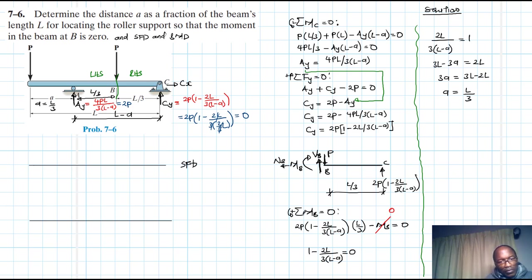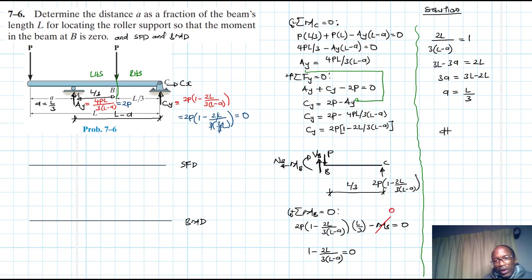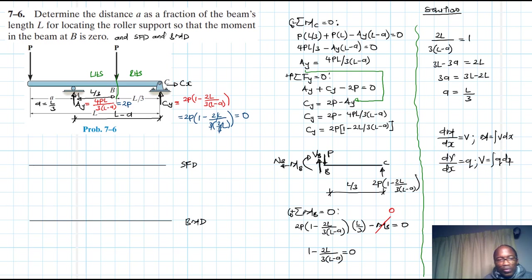We're using the two equations: the rate of change of moment with respect to X equals V, and moment is the area under the shear diagram. The rate of change of shear with respect to X equals the distributed force, and shear is the area under the distributed force.